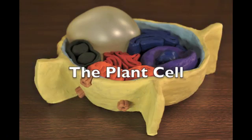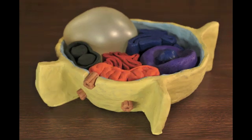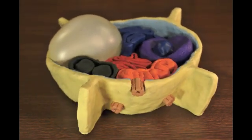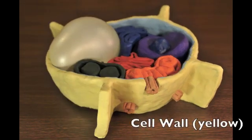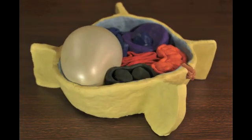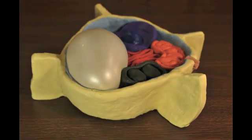Plant cells are different from animal cells because of their cell walls, which is part of the plant that we use to make paper. In particular, four parts of the plant cell are integral to the formation of fibers we use in paper making.